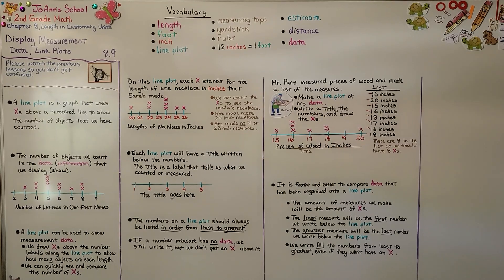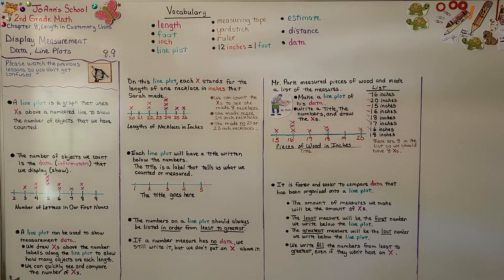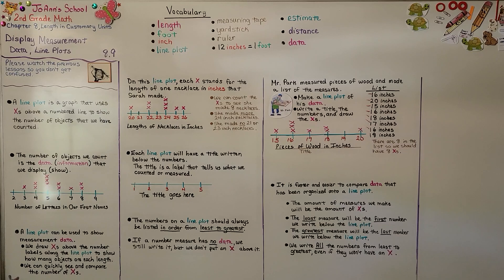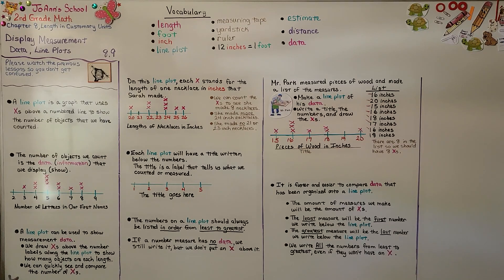You can try making your own line plot of the number of letters in your family's names. Or you could collect sticks outside and leaves and measure them to the nearest inch and make your own line plot. Our next lesson is going to be in chapter 9 about length in metric units. We're going to learn about centimeters and meters.